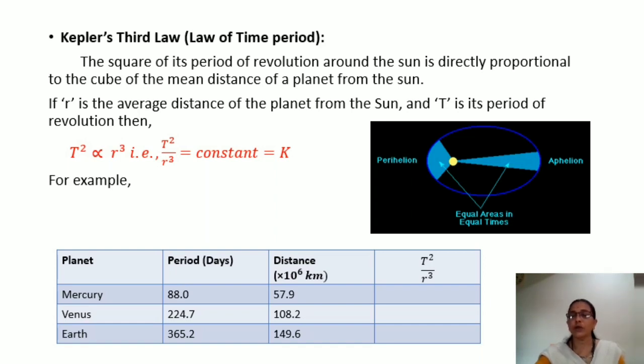After calculation, you will find all these values are approximately equal. Therefore, Kepler's third law tells you that the square of its period of revolution around the sun is directly proportional to the cube of the mean distance of a planet from the sun. You will find the areas here in the picture which are painted blue in color at aphelion and perihelion. These two areas are equal.